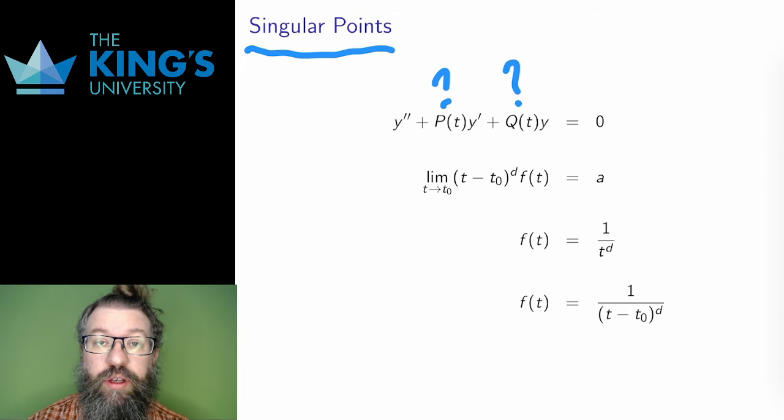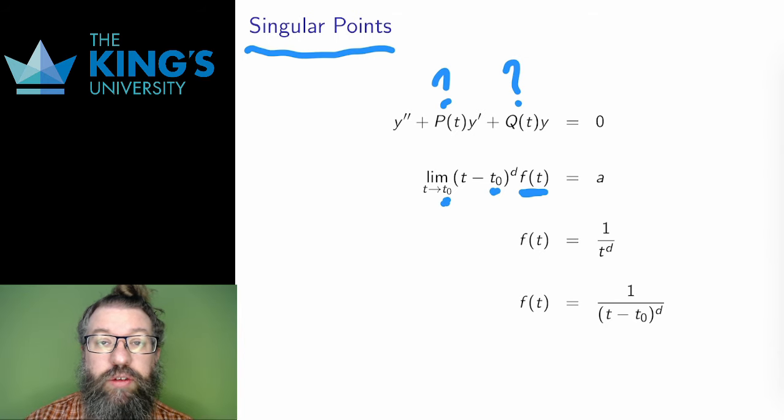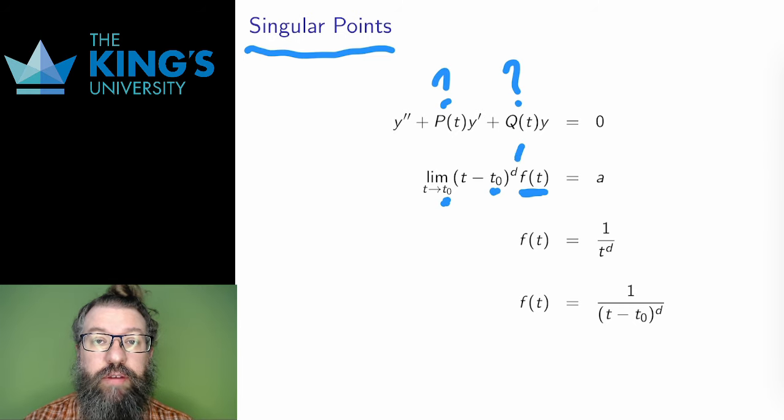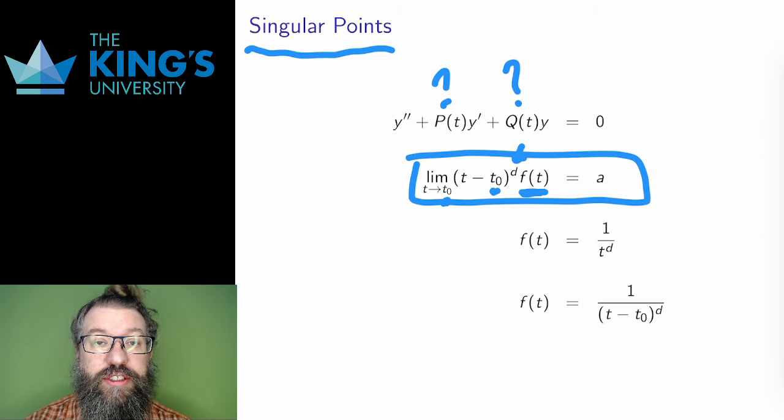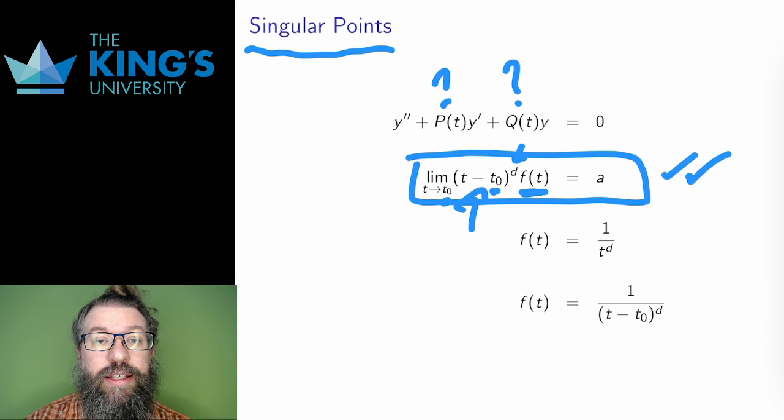Here's a new definition. Let f be any function, and let t0 be some point that is not in the domain of f. For P and Q, this is one way of having a singular point for the differential equation. The point t0 is called a pole for the function f of order d, if d is the smallest natural number for which this limit exists. It basically says that t0 is an asymptote, and I can get rid of that asymptote by multiplication by a high enough power of t minus t0. And d is the smallest power that I need to get rid of the asymptote.